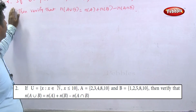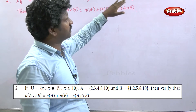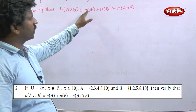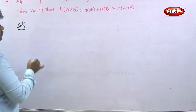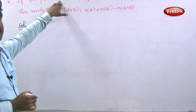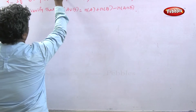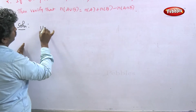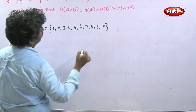Next problem: U equals the set of x such that x belongs to natural numbers and x is less than 10. A equals {2, 3, 4, 8, 10}, B equals {1, 2, 5, 8, 10}. Verify that n of A union B equals n of A plus n of B minus n of A intersection B. First write the universal set U equals {1, 2, 3, 4, 5, 6, 7, 8, 9, 10}.